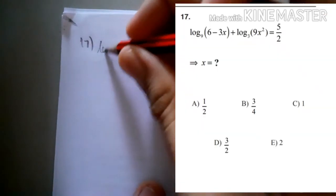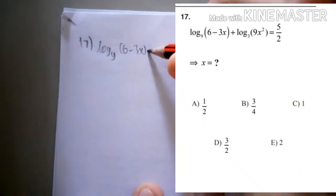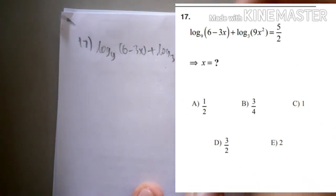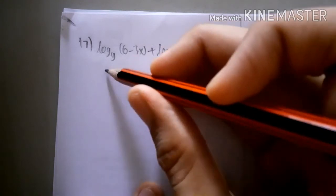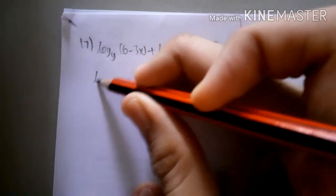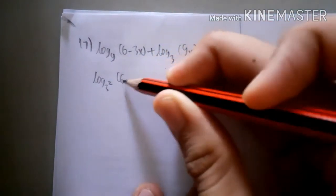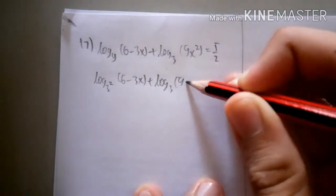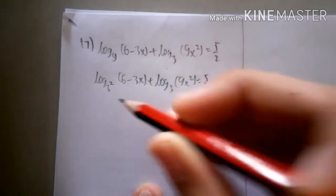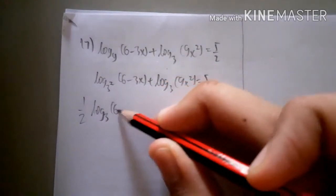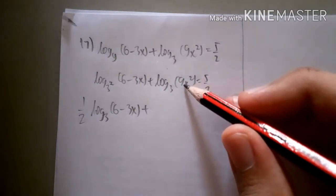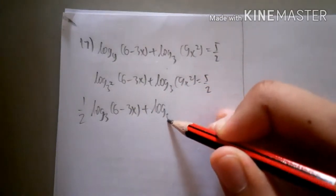For number 17: log base 9 of (6 - 3x) + log base 3 of (9x²) = 5/2. Since the first term is log base 9, we convert it to log base 3. Log base 9 becomes (1/2) log base 3, and the expression can be separated.